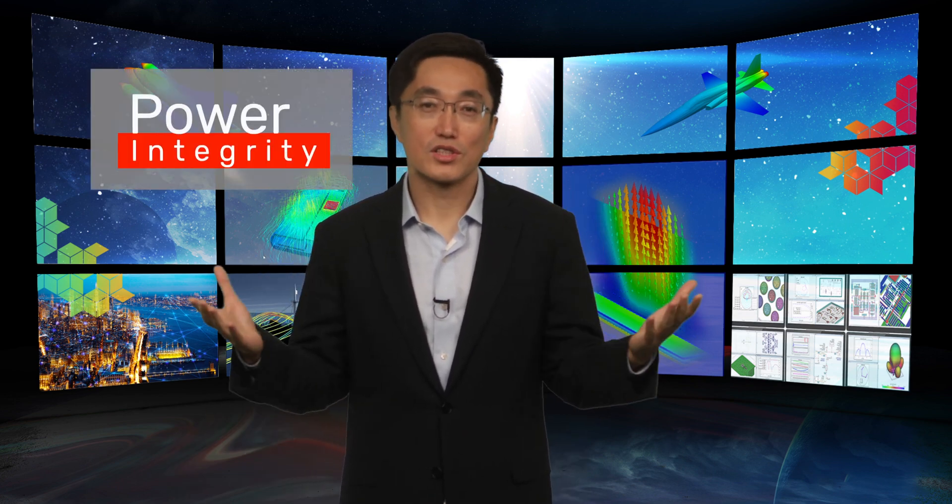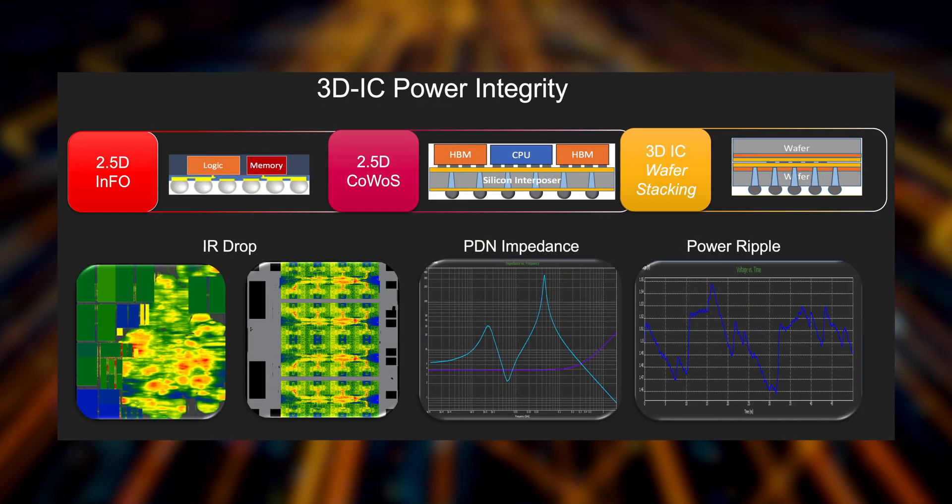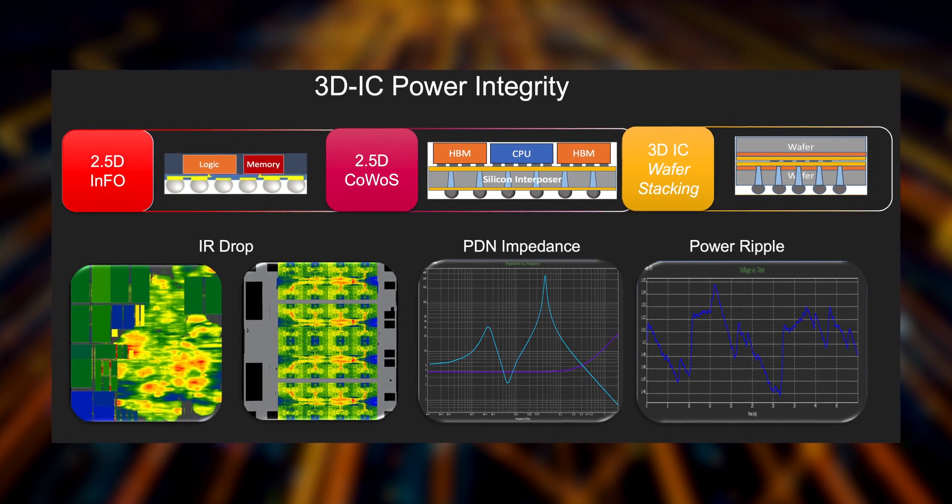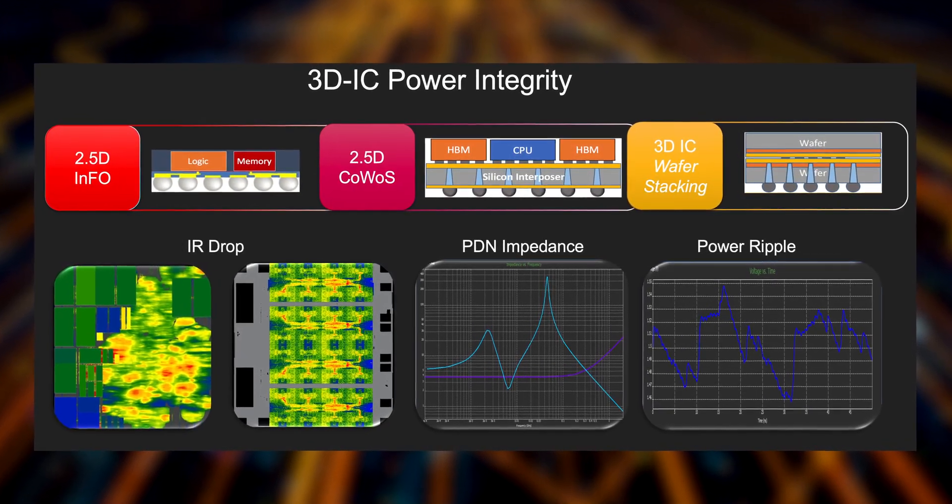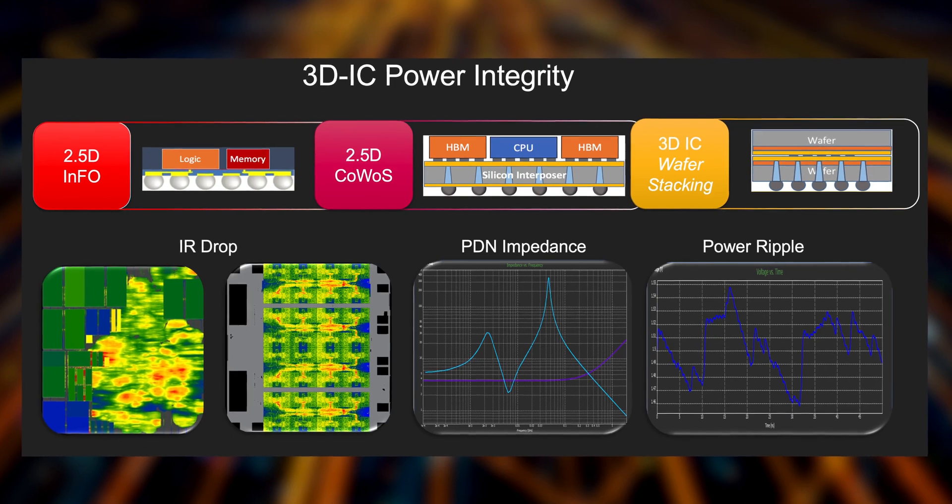In addition to thermal design, assuring integrity of power supplies to multiple dies through the package, interposer, TSVs, and TDVs, while meeting design specs, is another major challenge — both from a modeling complexity perspective and from a capacity perspective. Due to the integration of package, interposer, and multi-dies, early power integrity and thermal analysis for the whole 3D-IC system is critical.